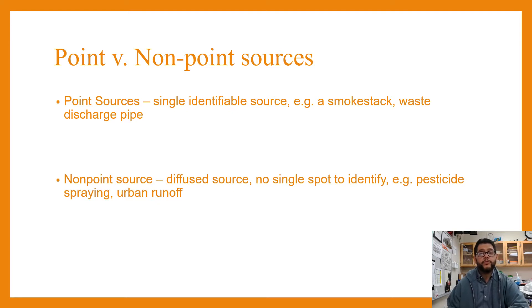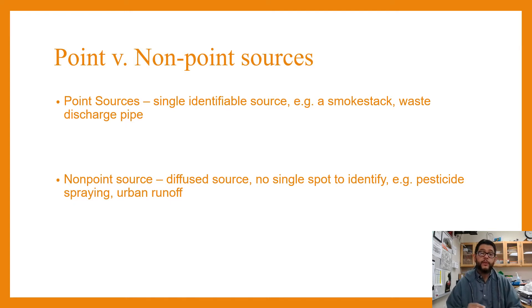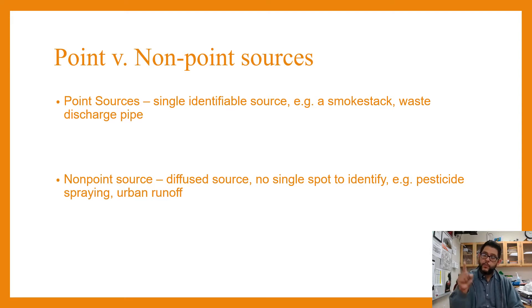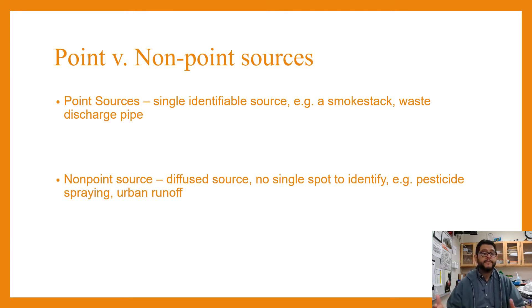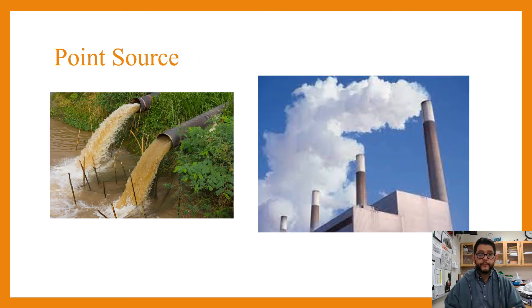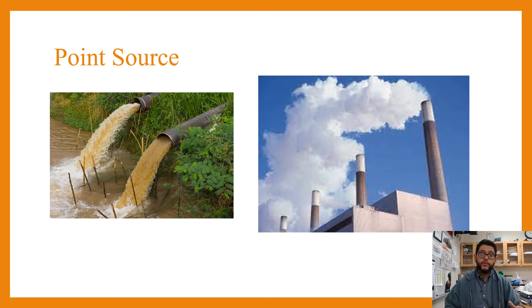One of the ways we try to identify these things is by looking at where they come from. We look at non-point versus point sources. Point sources are easy to define because you can point to it and say this is where it's coming from at that spot. A non-point source is going to be something that's hard to identify. Think about pesticide spraying or urban runoff — something that has many different sources, so you can't really identify where they come from. A waste discharge pipe is more of a point source.